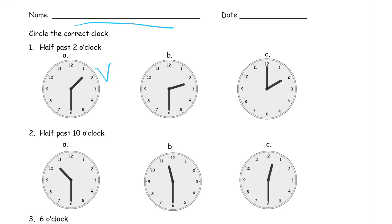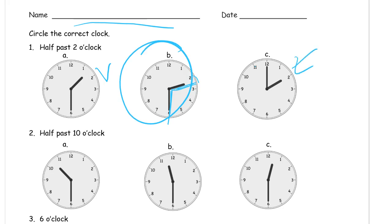So I'm going to keep looking. This one here looks like it's pointing about right in the middle between two and three. There's the minute hand pointing down at the six, so it's halfway past the two on its way to the three — half past two o'clock. That's the one. This one here is just regular two o'clock because the minute hand is pointing up at the 12.